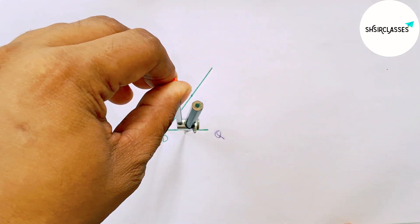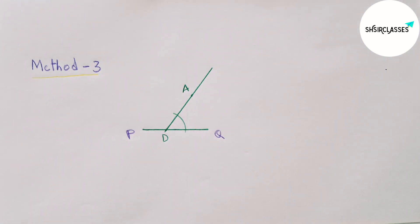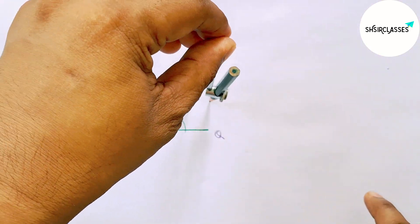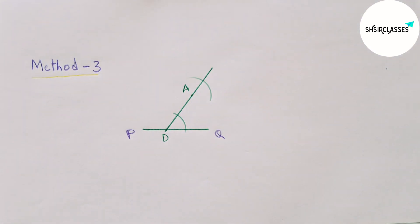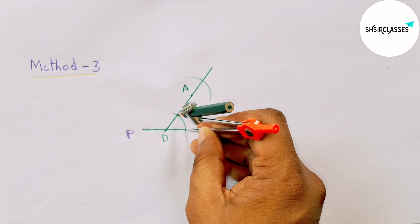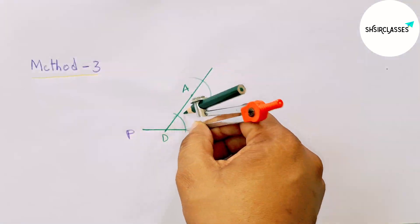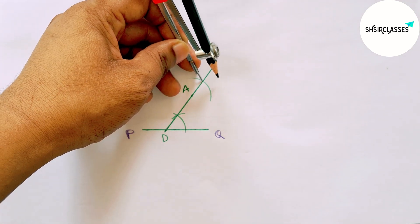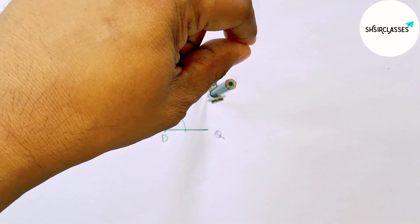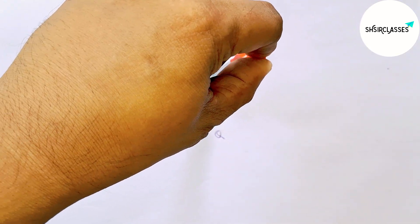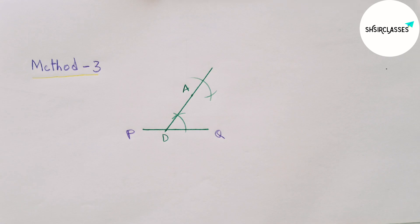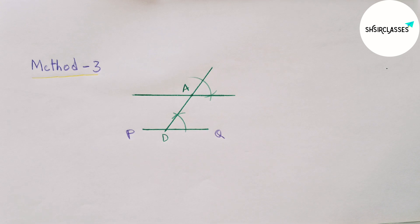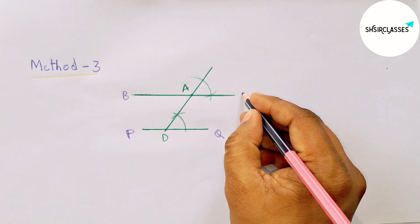Measuring the angle first — putting the compass on point D and taking any length, drawing an arc. Then putting the compass on point A with the same length and drawing an arc. Measuring this length and with the same length cutting at point A. Drawing equal angles so angle A equals angle D. Joining and labeling points B and C.